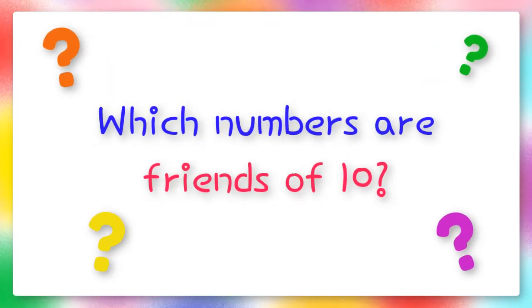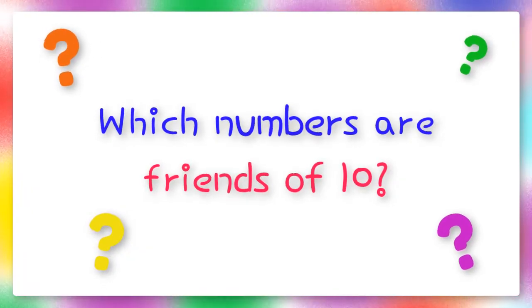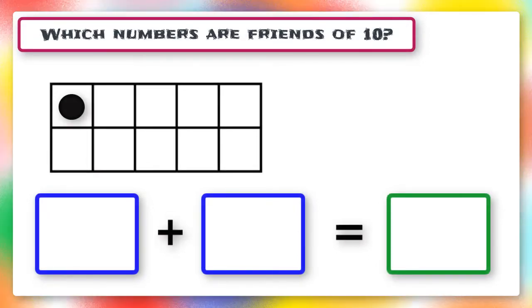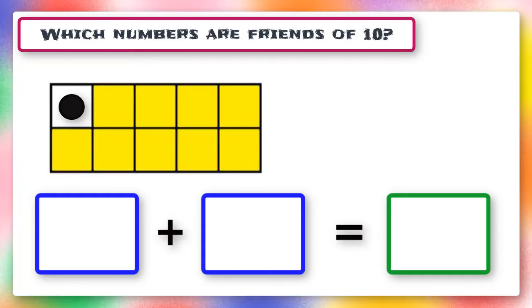Now let's have a look at which numbers are friends of 10. In this 10 frame, there is only one dot. How many dots are missing? 9. That's right! 9 dots were missing. So that means that 1 and 9 are friends of 10.